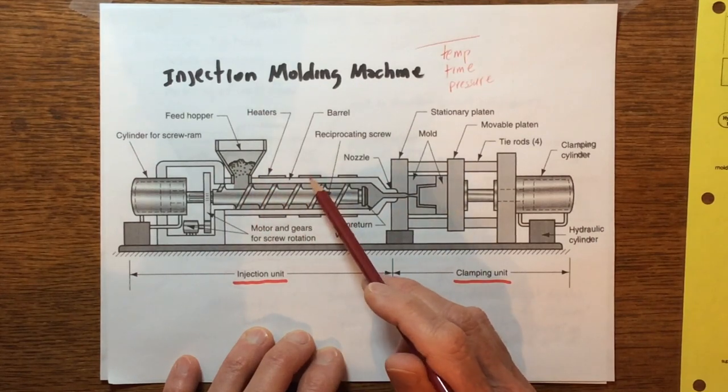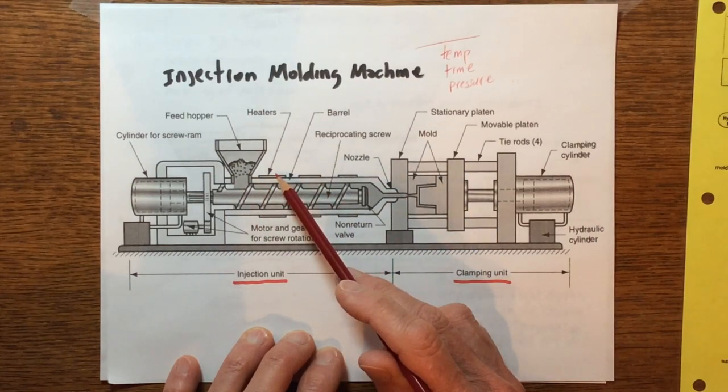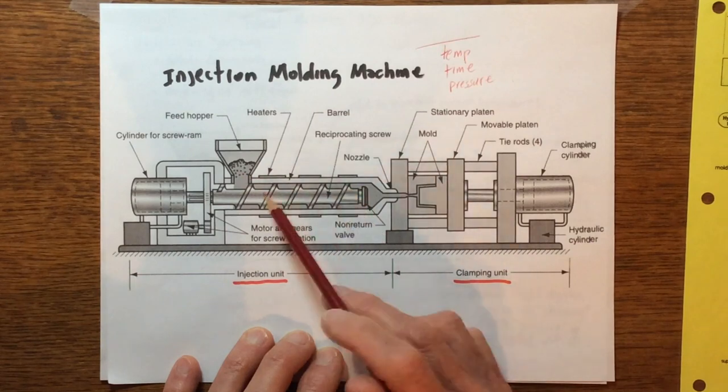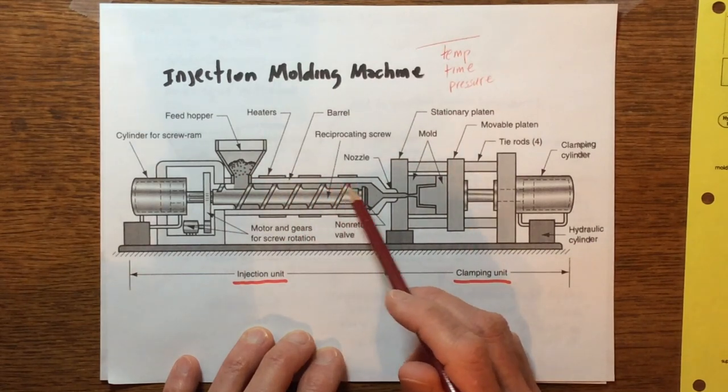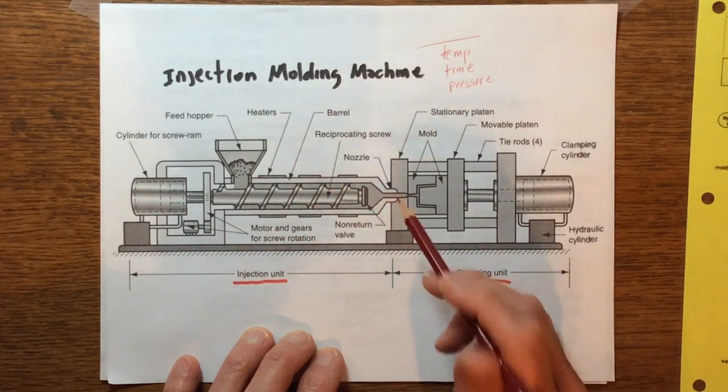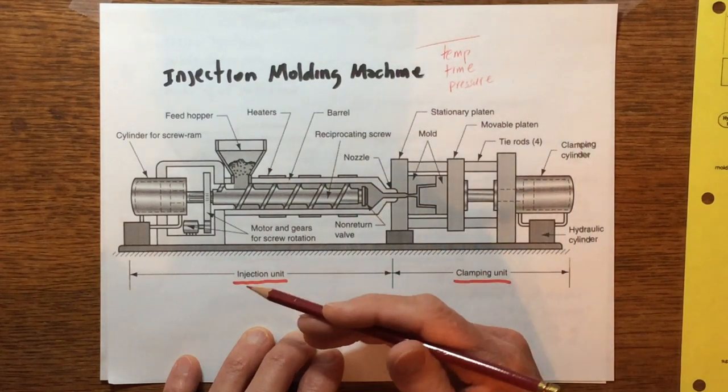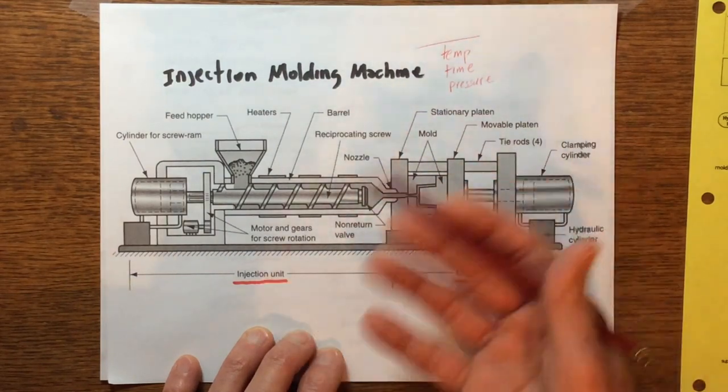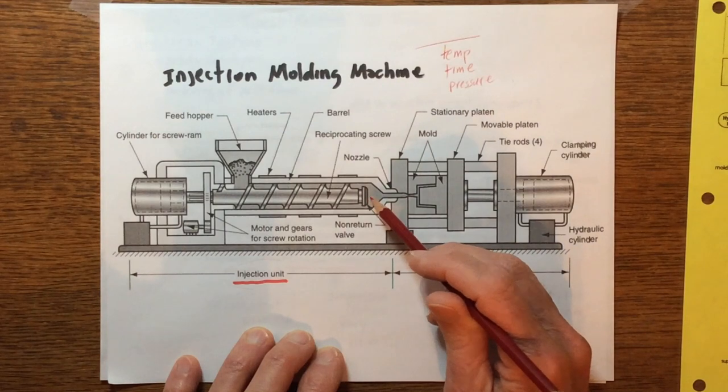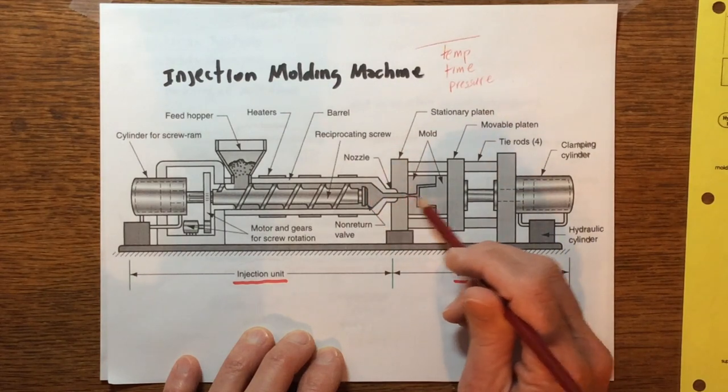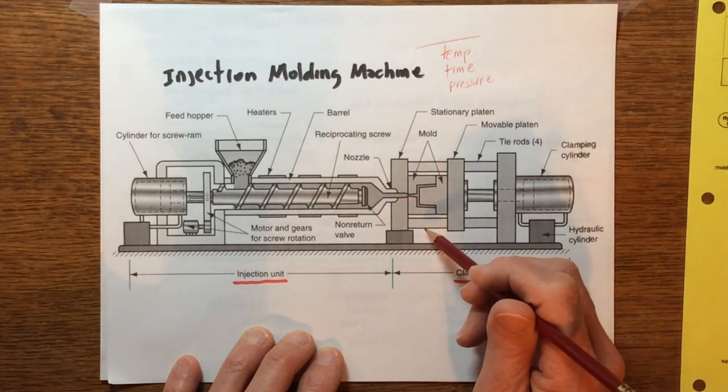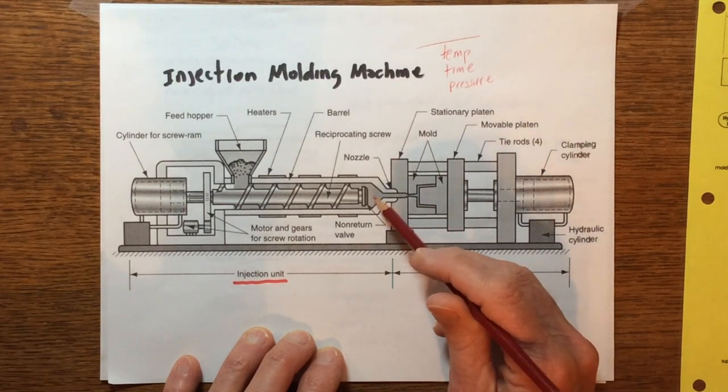Remember, you're not just making one or two parts, you're making thousands of parts, so temperature, time, and pressure all have to be input to this machine correctly if you're going to get a good part. Let's talk about temperature. We also have to have the right temperature. We don't want it too hot because it'll degrade.